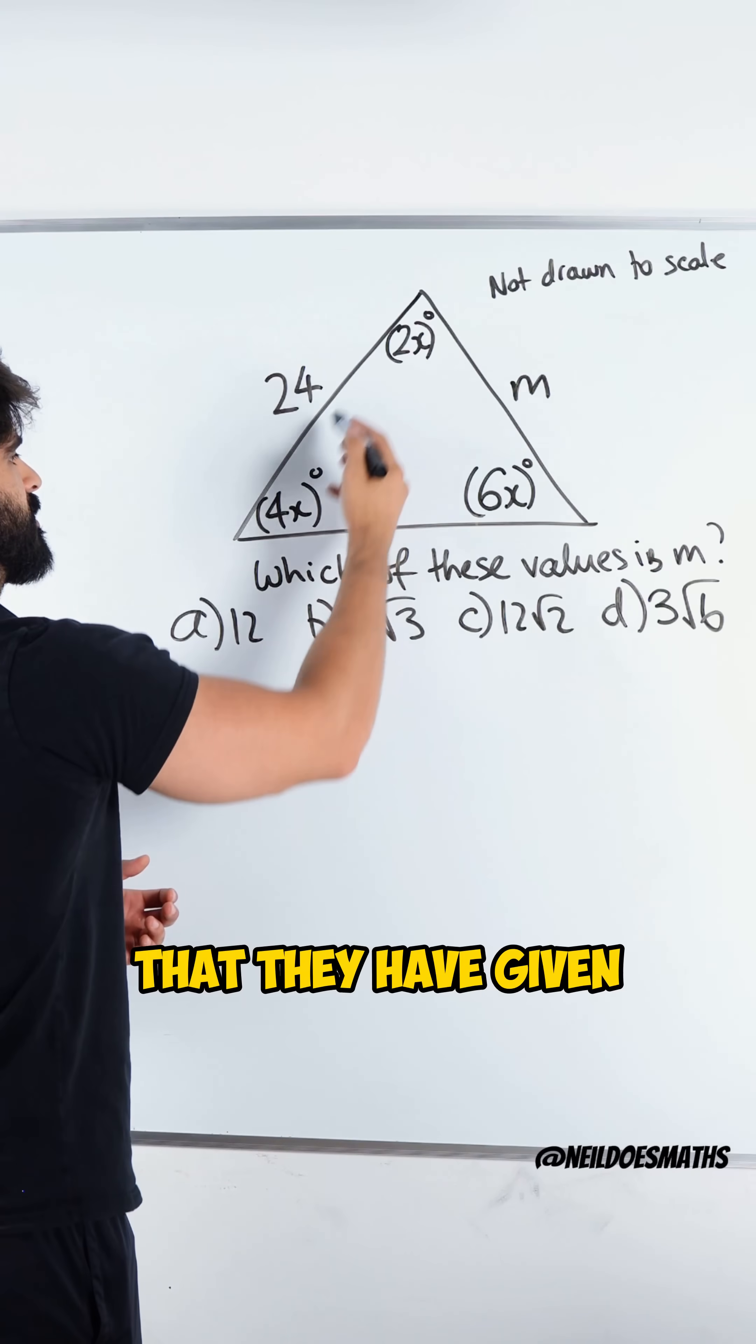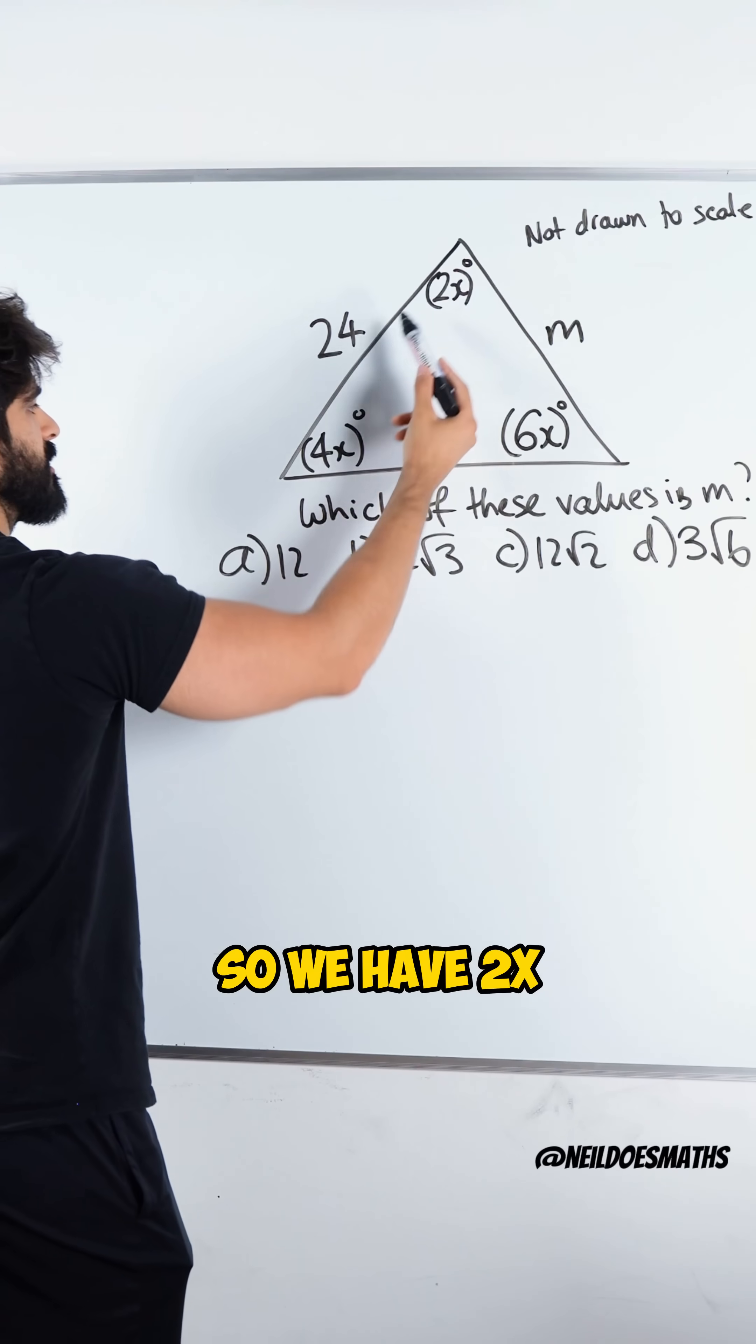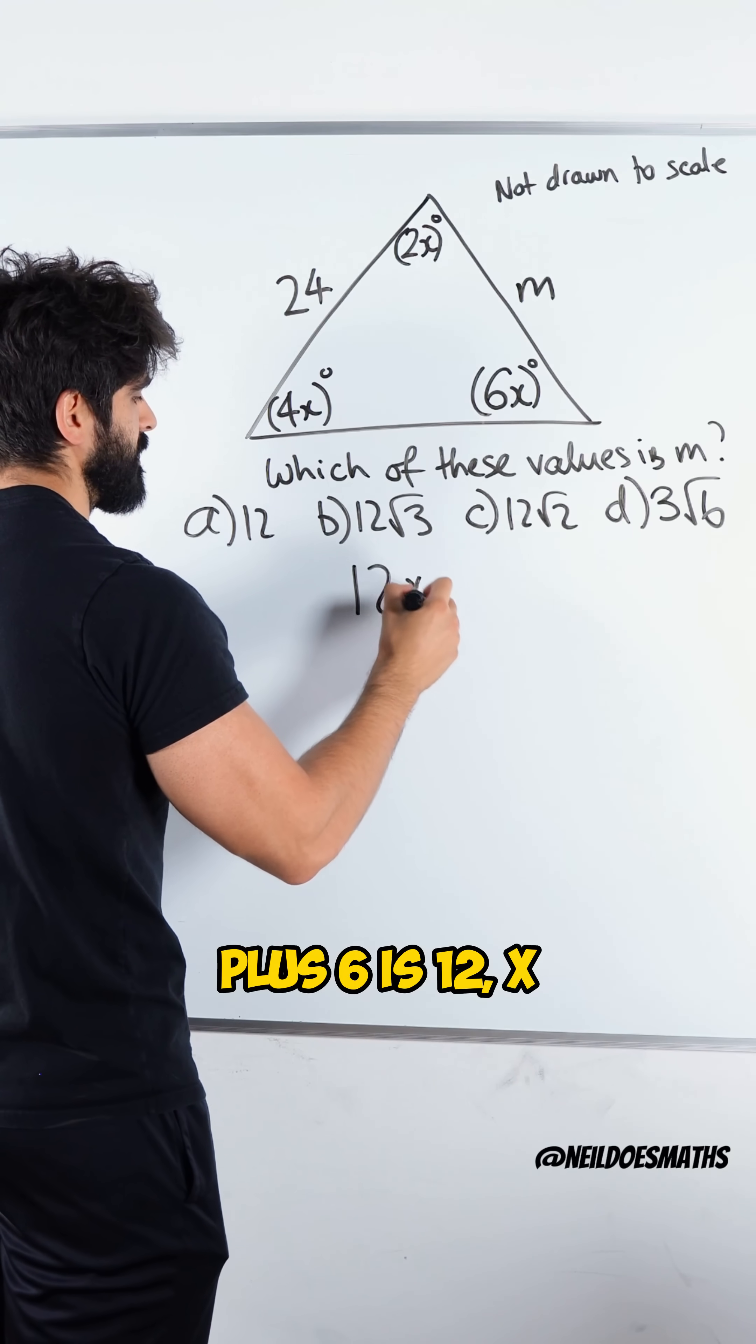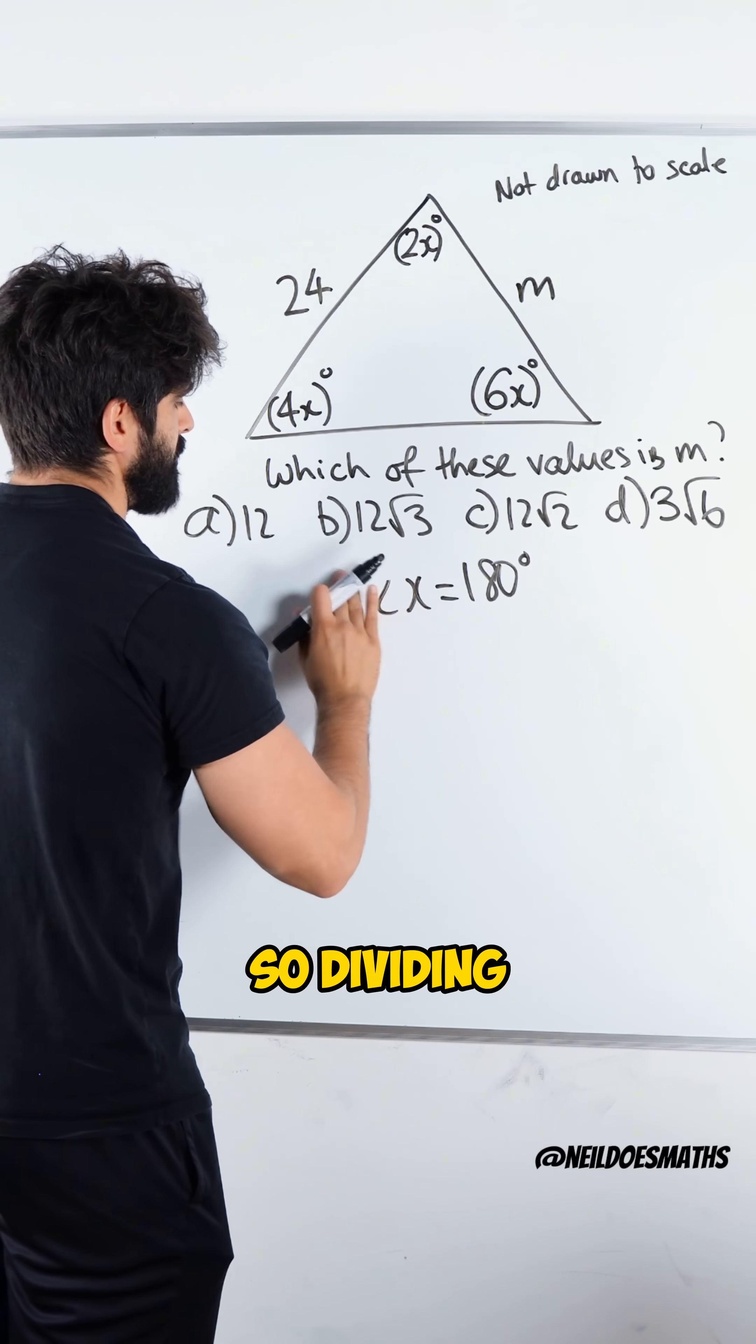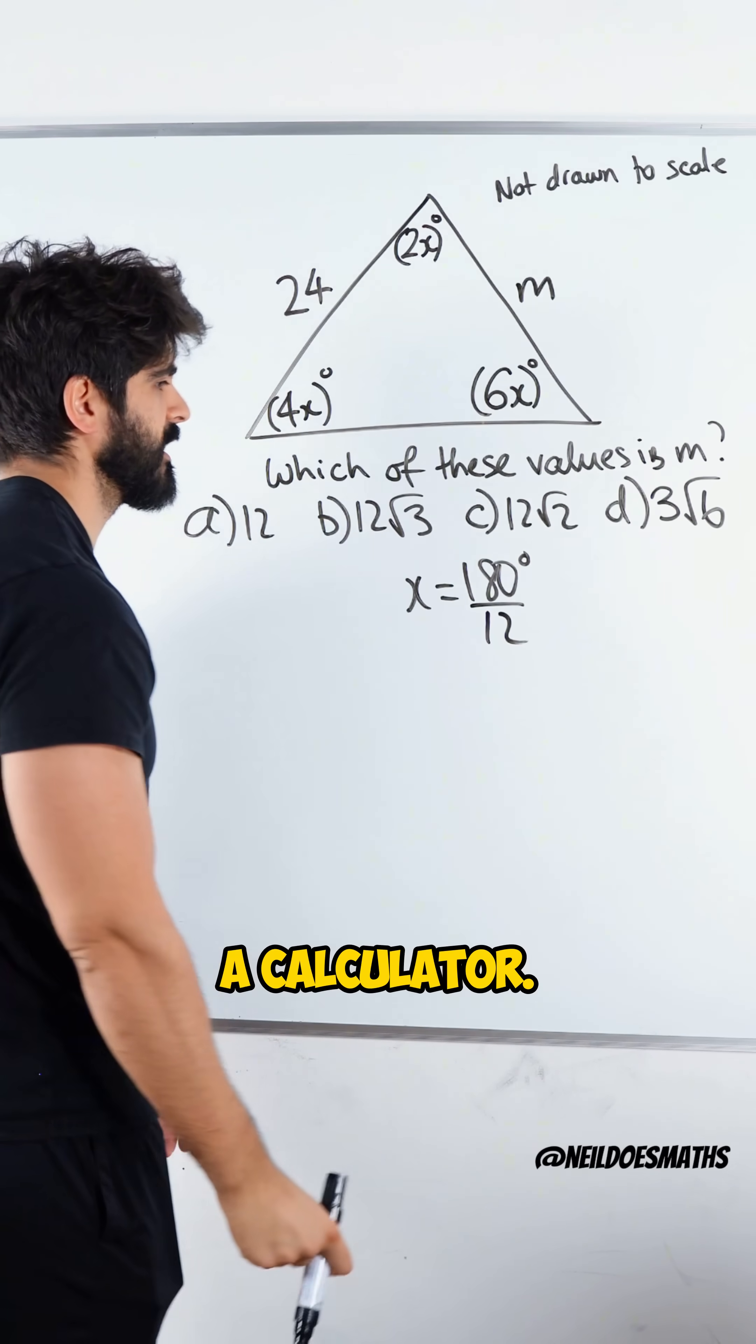Well, the first thing I notice is that they have given us three angles. They sum to 180 degrees. So we have 2x plus 4x plus 6x. 2 plus 4 plus 6 is 12x equals 180 degrees. So we need to divide by 12.